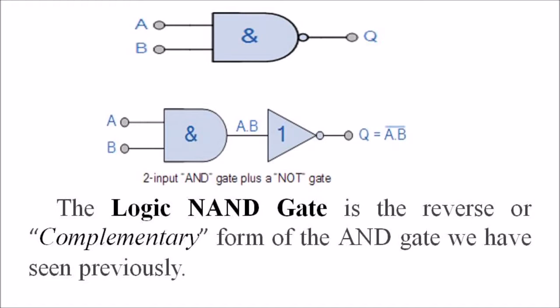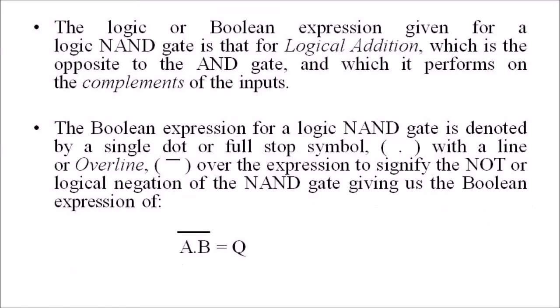The logic NAND gate is a reverse or complementary form of the AND gate we have seen in the previous lecture. The logic or boolean expression given for a logic NAND gate is for logical addition, which is the opposite to the AND gate, and performs on the complementation of the inputs. The boolean expression is denoted by a single dot or full stop symbol with a line or overline over the expression, giving us the boolean expression: A dot B equals Q dash.